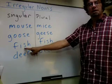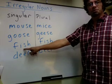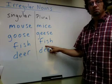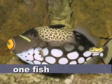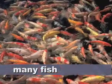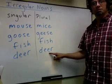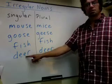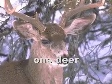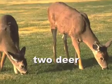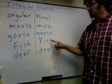Fish is a very popular noun for the animal and for the meat. One fish, two fish. The noun does not change. One fish, many fish. Deer also does not change in the plural form. Deer becomes deer. One deer, two deer. There are many animal nouns that do not change in the plural form.